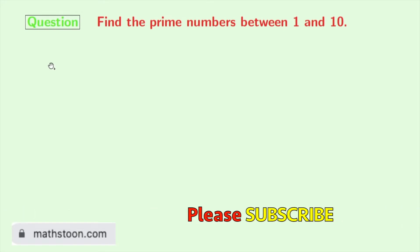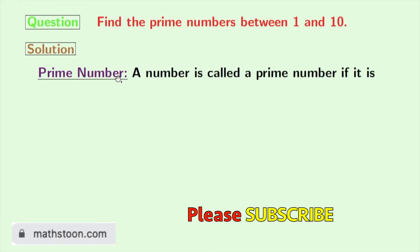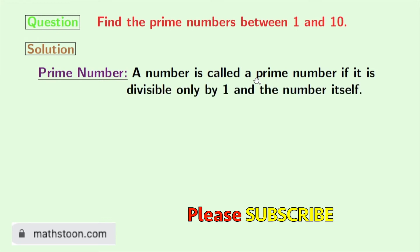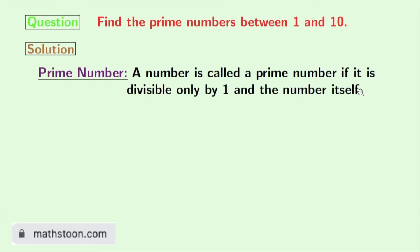Now let's start. Let us first recall the definition of a prime number. We can call a number a prime if it is divisible only by 1 and the number itself.